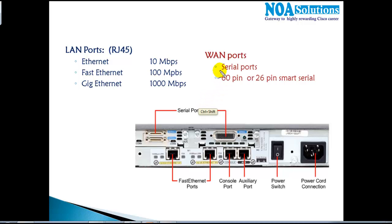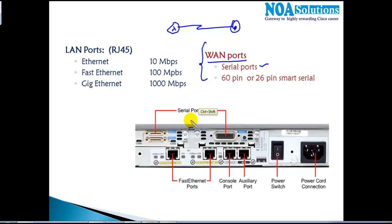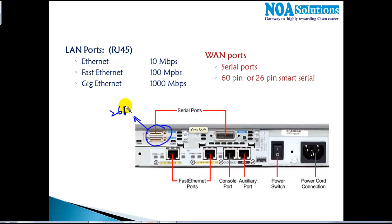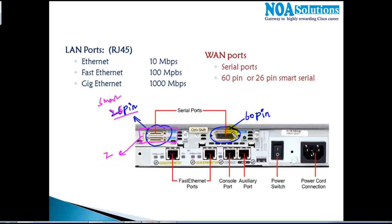The next category is WAN ports, which connect one router to another router at a remote location. These are referred to as serial ports. There are two kinds of serial ports: a 26-pin serial port, which is smaller, and a 60-pin serial port, which is older. In today's networks you will mostly find the 26-pin port, also called a smart serial port. On a single slot you can have two ports with the smart serial.